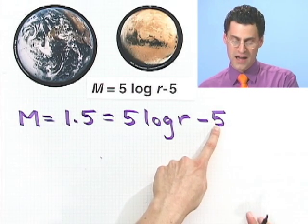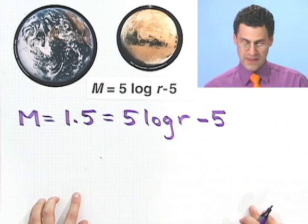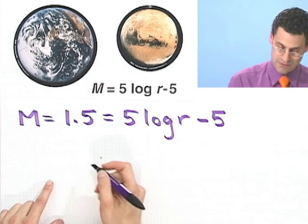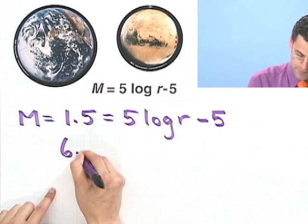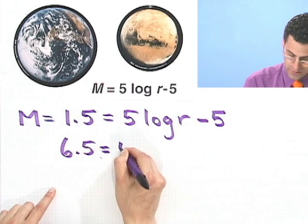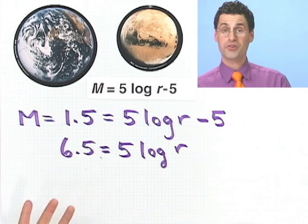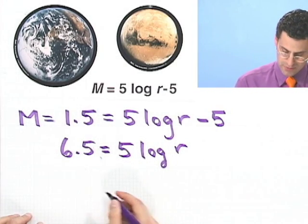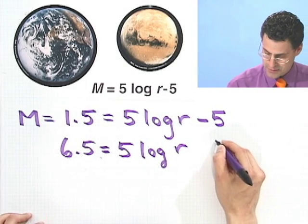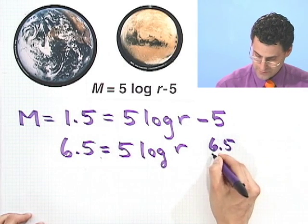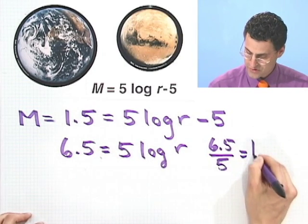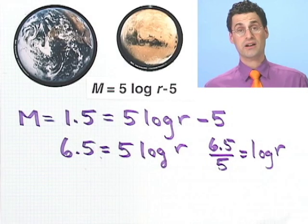So if I bring this minus 5 to this side, it becomes plus 5. And so I see 6.5 equals 5 log r. If I divide both sides by 5, I would see that 6.5 divided by 5 equals log r. Now how could I solve this?